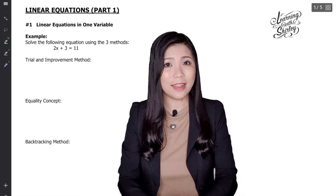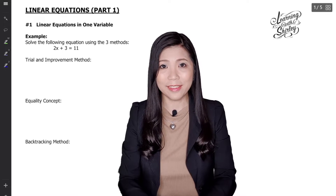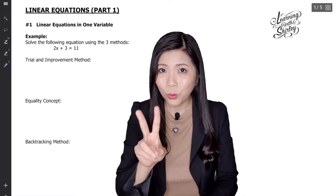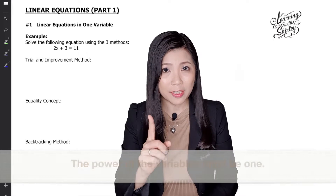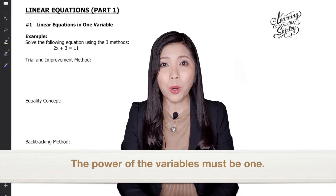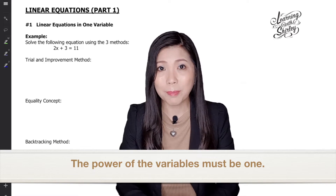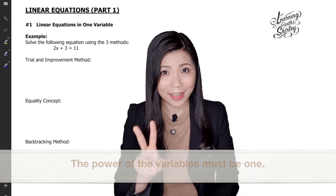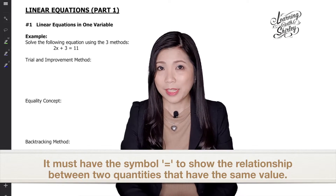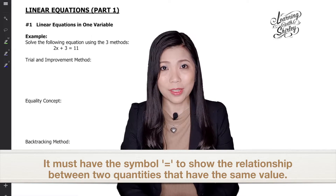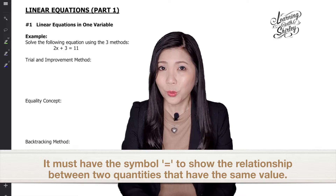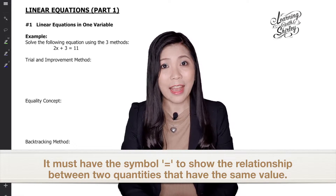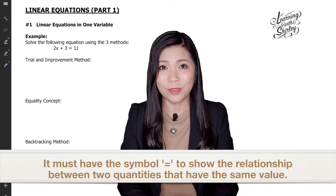What is a linear equation? There are two things that you must remember. First, the power of the variable must be 1. Second, it must have the equals symbol to show the relationship between two quantities that have the same value.